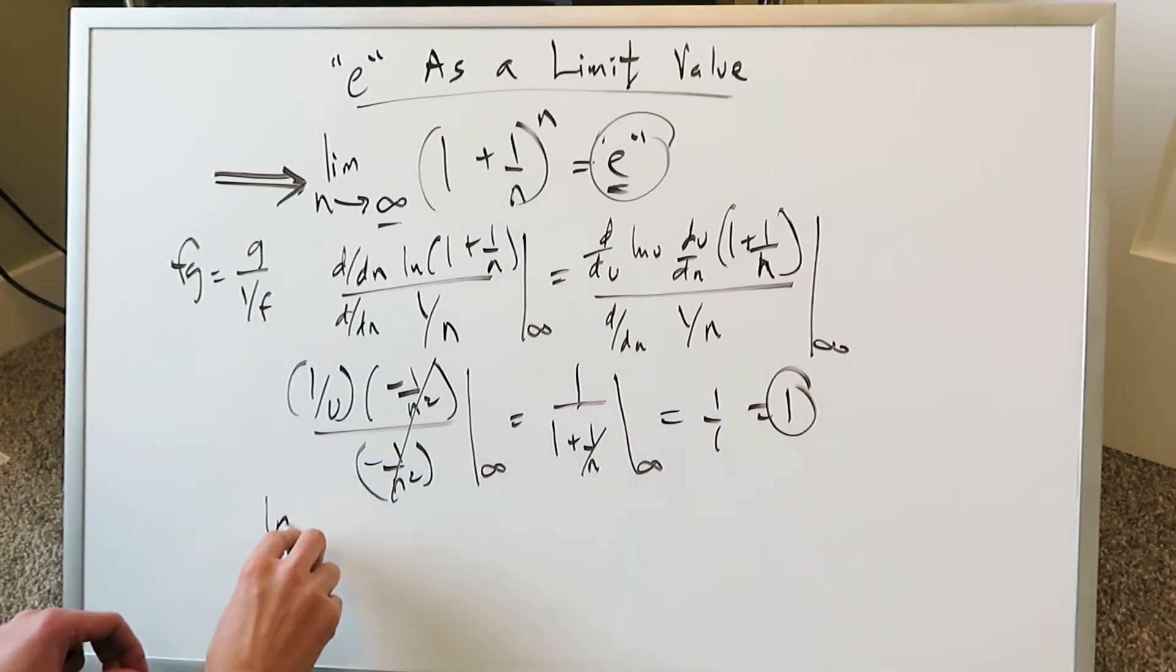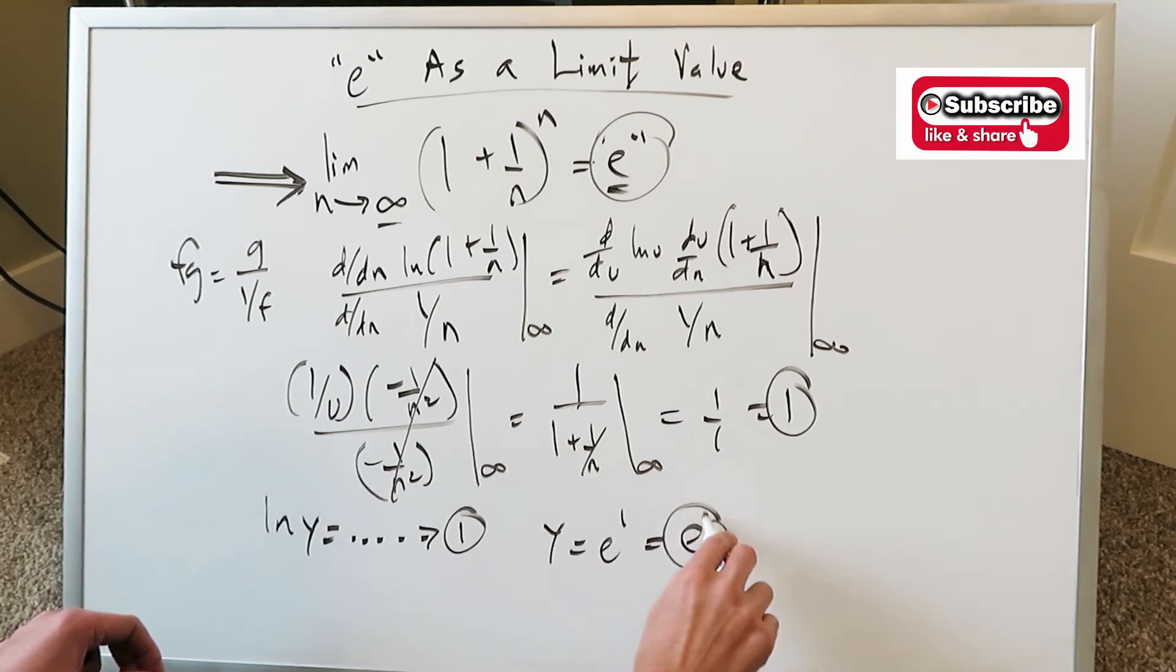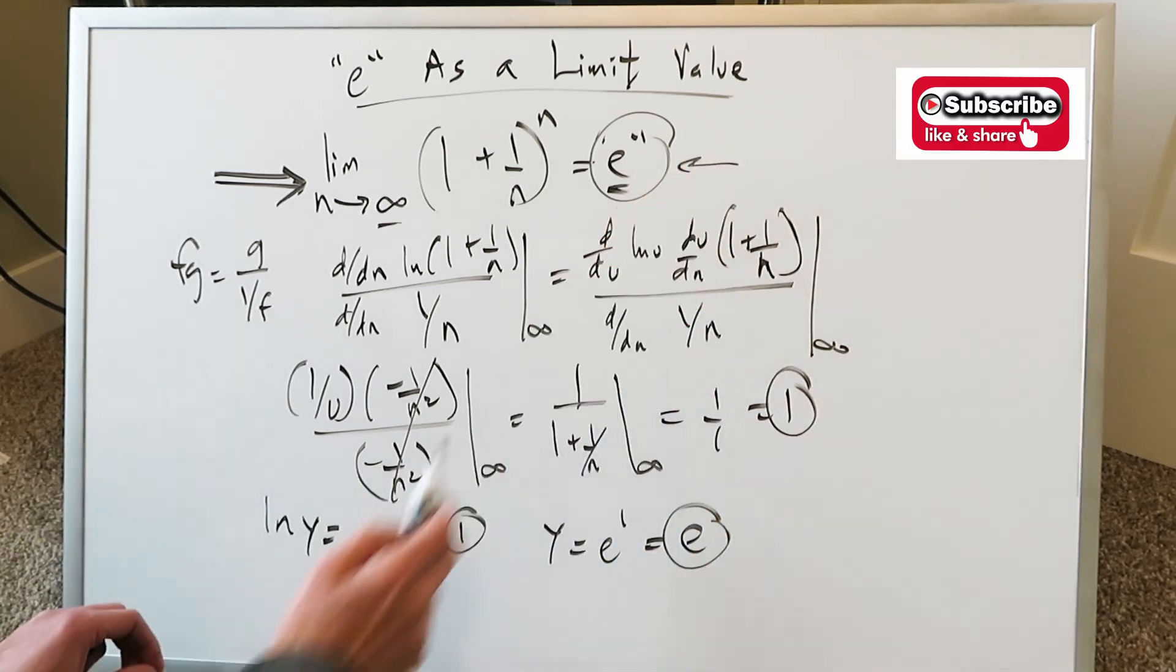But your original question and statement was ln y was equal to everything you've done over here. Which here in this instance is equal to 1. You solve for this y. y is equal to e to the power of 1 which is equal to e. And here it shows you exactly what we were trying to do.